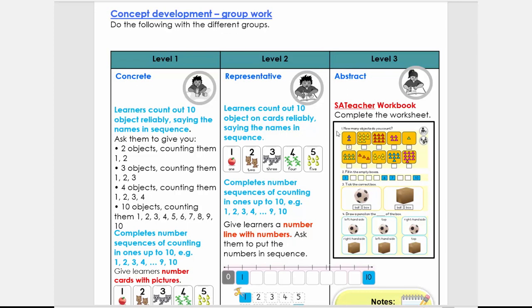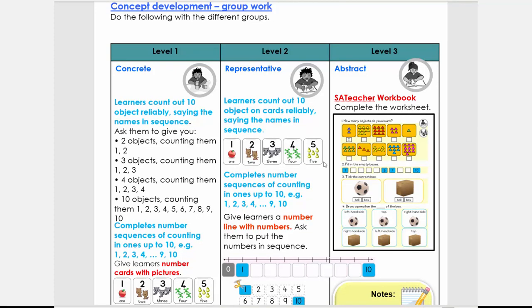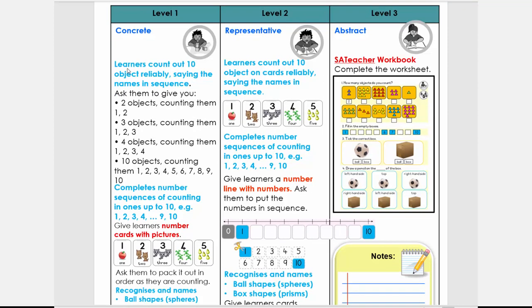Then we're going to come to the levels, so I always add these levels. So the CAPS curriculum tells us what to do, but it doesn't always tell us how to do it or how it links to international models. So I'm using an international mathematics model to do all my mathematics, and here what I use is the CRA method: so concrete, representative, abstract. And it just gives you ideas. So for the concrete activities, the learner is going to count out 10 objects.